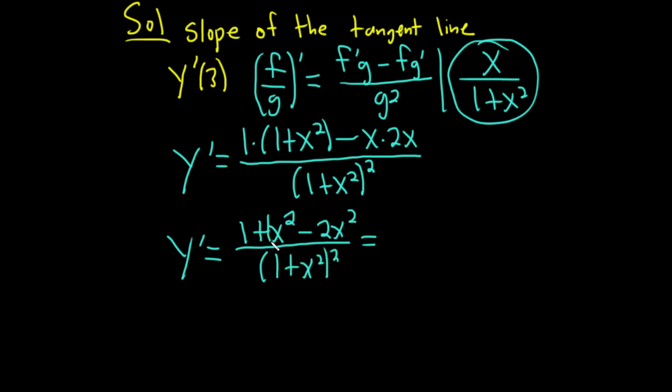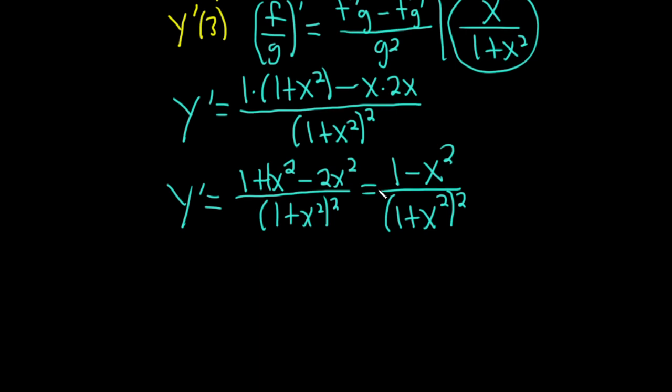There's a 1x² here, so this will be 1, and then 1x² minus 2x² is minus x², and that's all over (1 + x²)². That's the derivative.